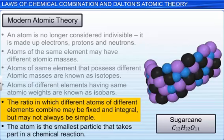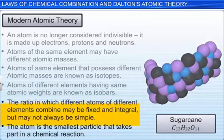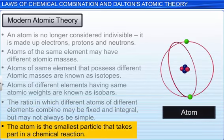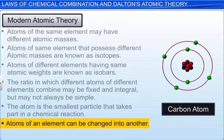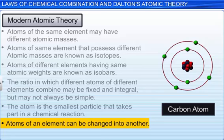For example, the elements C, H, and O combine to form sugar cane. The ratio of the elements 12 is to 22 is to 11 is fixed and integral, but it is not a simple ratio. The atom is the smallest particle that takes part in a chemical reaction. In nuclear reactions, atoms of an element can be changed into another. For example, atoms of nitrogen can be changed to oxygen through bombardment of alpha rays.